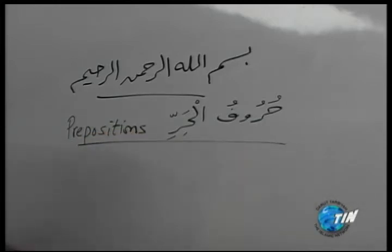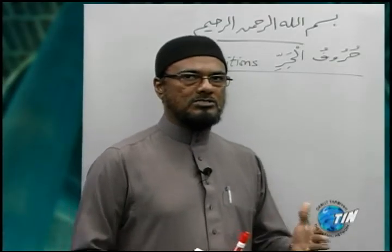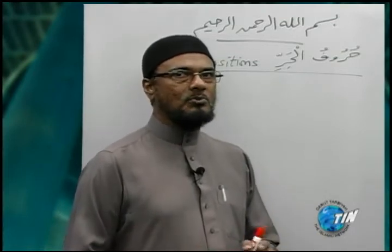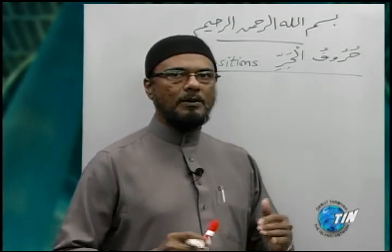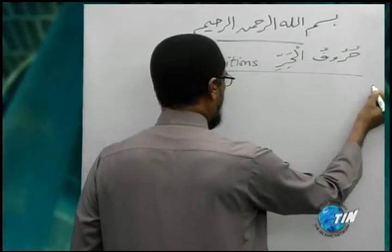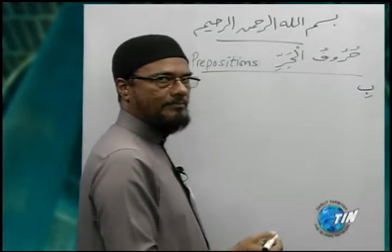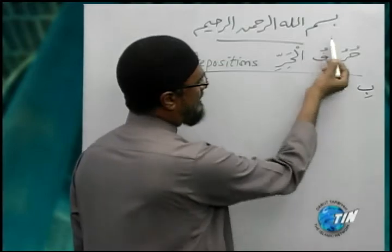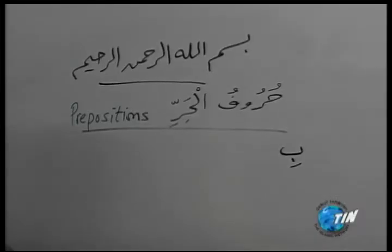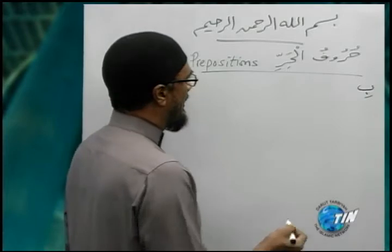Today inshallah we want to continue. We are going to look back at those prepositions that we looked at last week and make sure you know them. We will first start with the prepositions that are single letters. The first is ba — with a kasra, bi. It is the same ba that we see in Bismillah. The ba with the kasra means 'in' or 'with'.